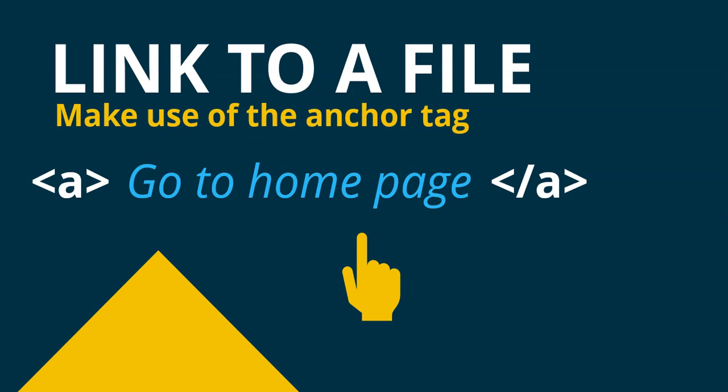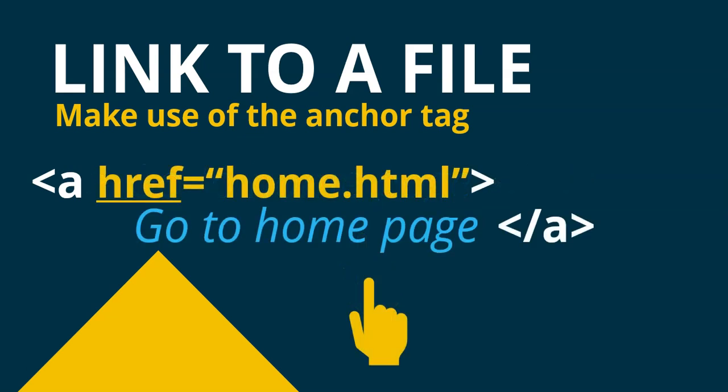If you want to click on something, you'll see that text in the web page — for example 'go to home' — and when you move your mouse over it, it'll change to a little hand to indicate it's a link. But a link to where? How does it know where to go? That's where the href attribute comes in — you add href and specify the name of the file you want to go to.